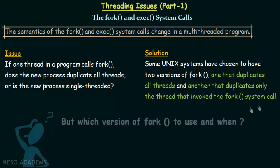Now the question arises: which version of fork to use and when? We have two versions, but how do we decide which one to use — when should we duplicate all threads, or when should we duplicate only the single thread that called fork? Before answering that, let us also recall what the exec system call does and what will happen when exec is invoked in a process consisting of multiple threads.